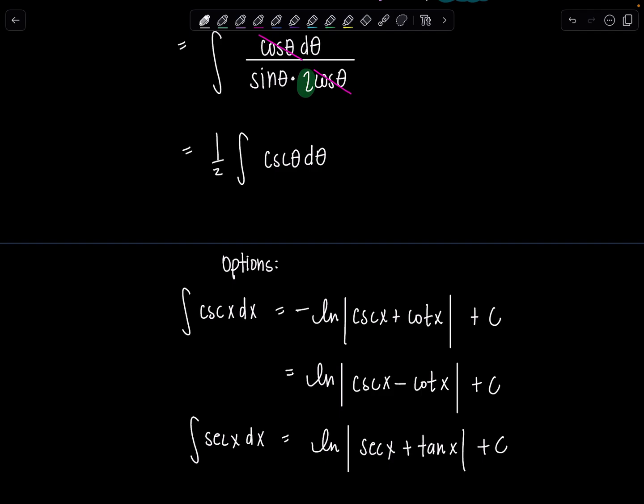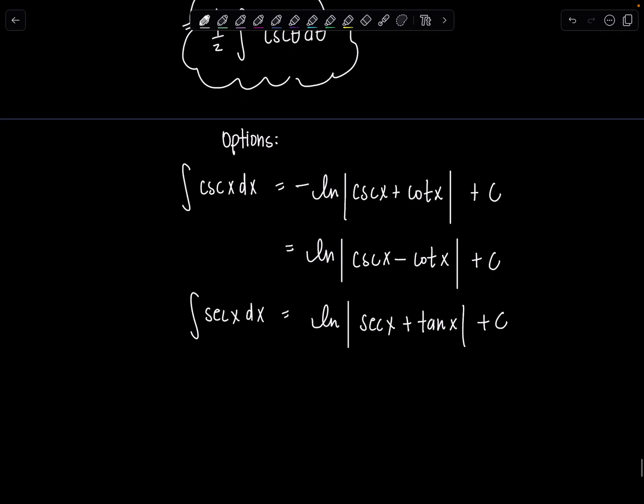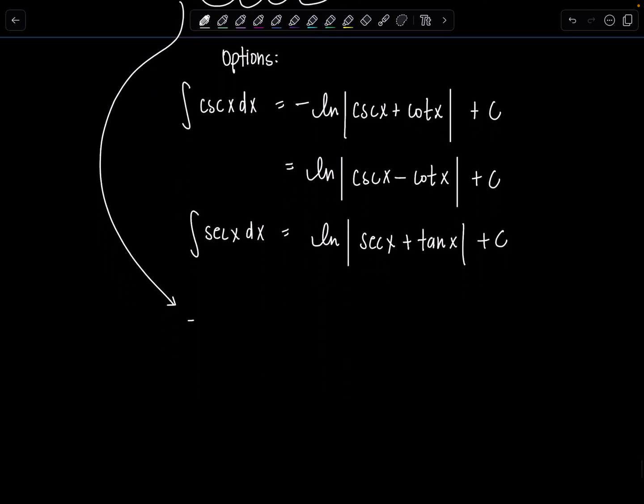Okay. So back to the problem. Here we were. We have one half integral cosecant theta d theta. So I'm going to go with the positive one. Let's just be positive people. One half natural log absolute value cosecant theta minus cotangent theta plus c.